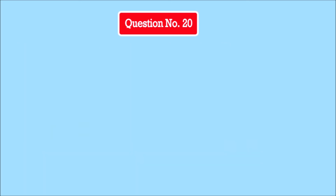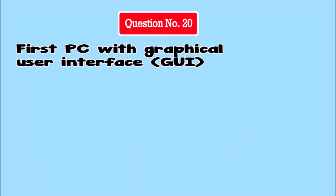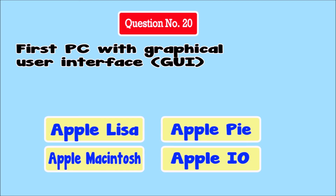Question number twenty. First PC with Graphical User Interface or GUI. Options: Apple Lisa, Apple Pie, Apple Macintosh, Apple I.O.